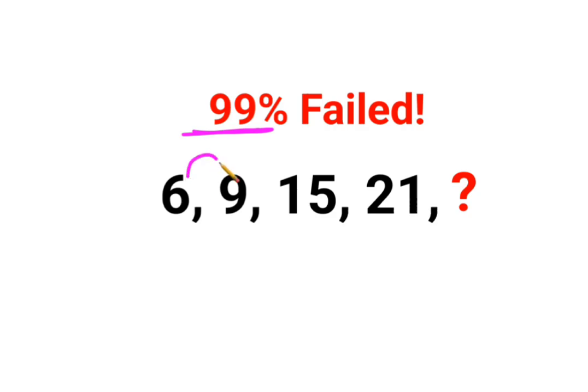Here we have 6 which is followed by 9, then 15, then 21, and now this is something we need to find. So see, all of them are multiples of 3.